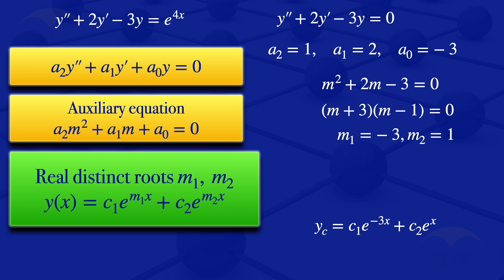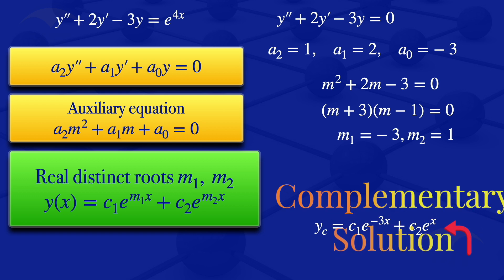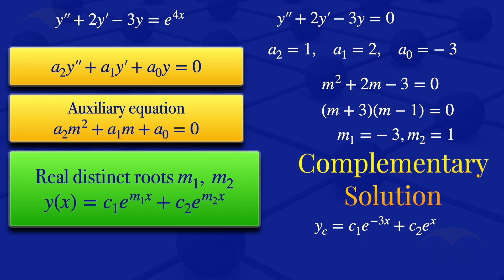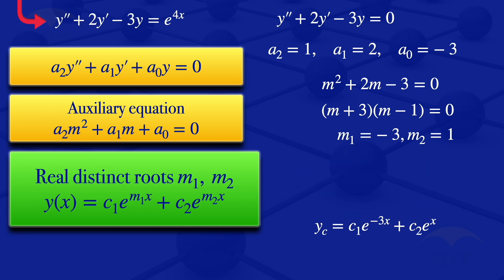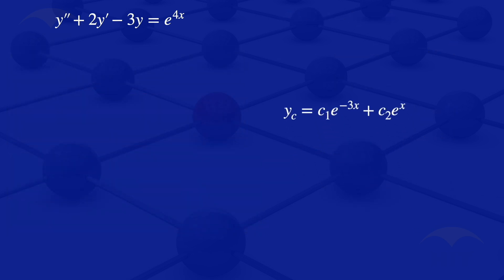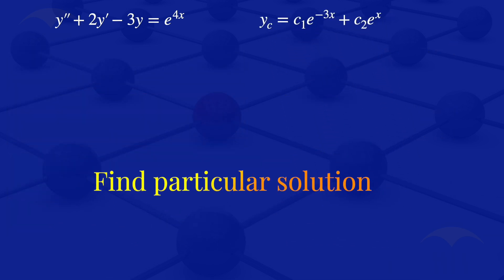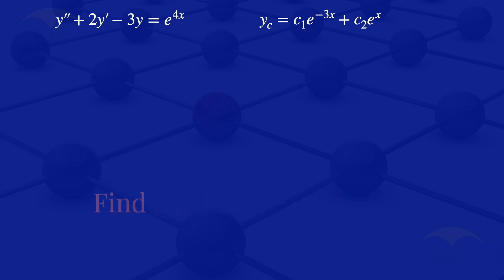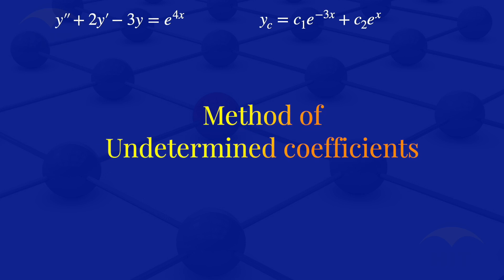Substituting m1 = -3 and m2 = 1, our complementary solution is yc = c1·e^(-3x) + c2·e^x. This is the solution to the homogeneous ODE and the complementary solution to y'' + 2y' - 3y = e^(4x). We now need to find the particular solution, and I am going to use the method of undetermined coefficients.